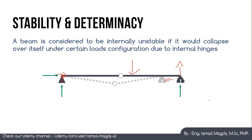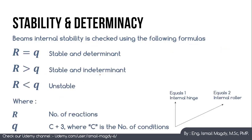To check beam internal stability, we rely on three equations: R equals Q means the beam is stable and determinate; R greater than Q means the beam is stable and indeterminate; R less than Q means the beam is unstable. Here R is the number of reactions, which depends on the type of supports, and Q equals C plus 3, where C is the number of conditions — equal to 1 for internal hinges and 2 for internal rollers. For a beam to be determinate, reactions can be calculated using the three equilibrium equations: ΣM = 0, ΣFy = 0, and ΣFx = 0.